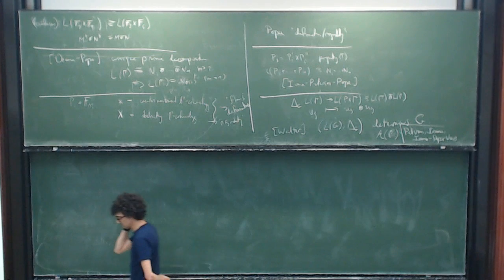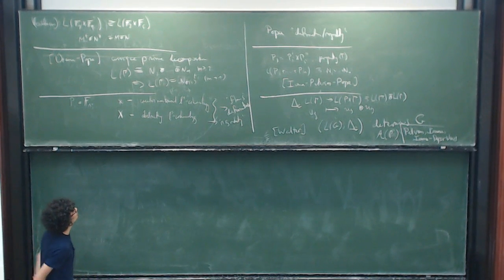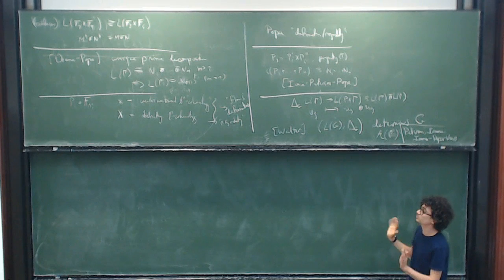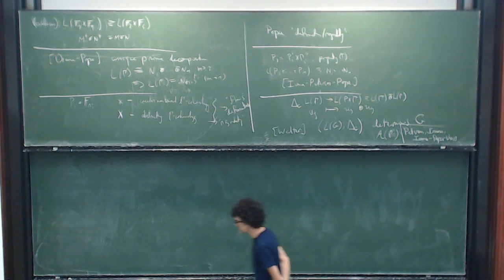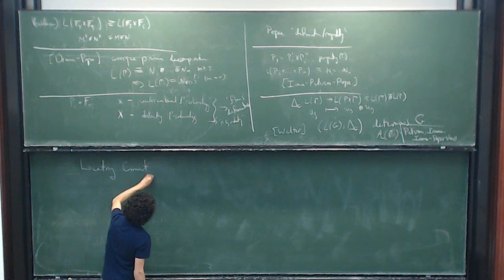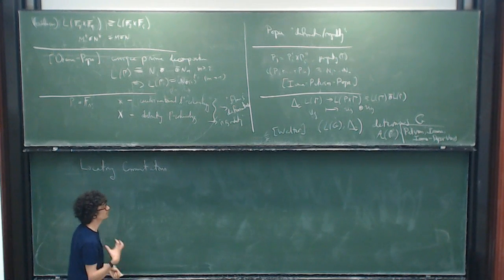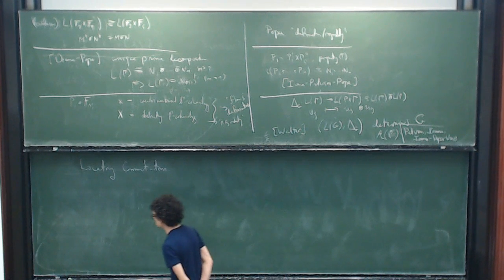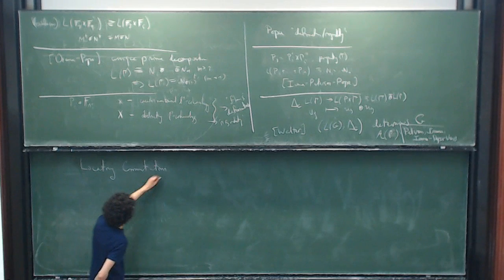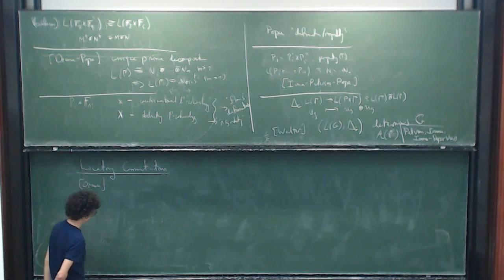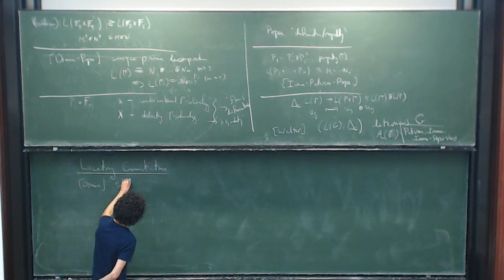The other ingredient we need is: if we're looking at products and want product-type rigidity, we need a way of controlling product-type structures in our group von Neumann algebra — we really need some kind of control of commutation. The co-multiplication pulls the group structure out, and then we need some way of locating where we have commutation relations in the von Neumann algebra. The first and most famous example of this is Ozawa's solidity theorem: for a non-elementary hyperbolic group, if you have a diffuse subalgebra, its commutant is amenable.